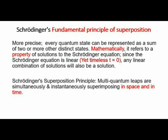This slide shows Schrödinger's fundamental principle of superposition as stated: every quantum state can be represented as a sum of two or more other distinct states. Mathematically, it refers to a property of solutions to Schrödinger's equation. Since the Schrödinger equation is linear yet timeless — t = 0 — any linear combination of solutions will also be a solution. In short, Schrödinger's superposition principle is that multi-quantum leaps are simultaneously and instantaneously superimposing in space and in time.